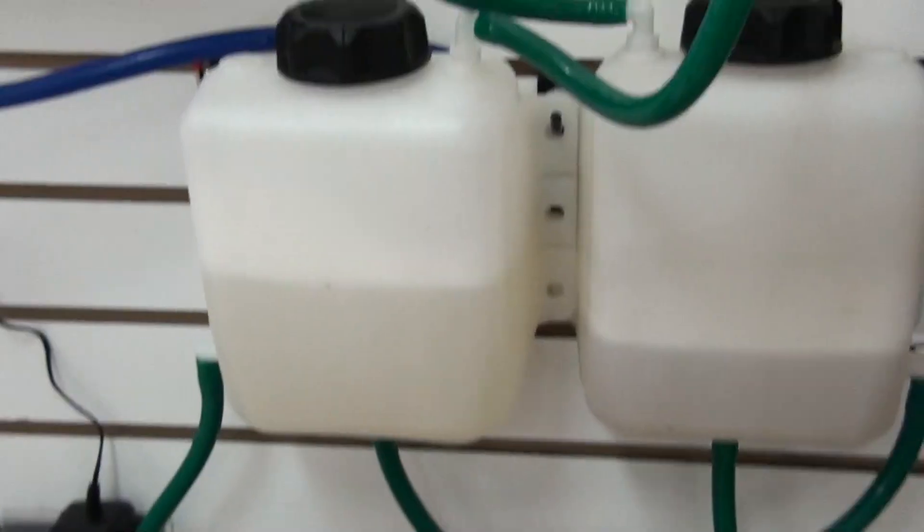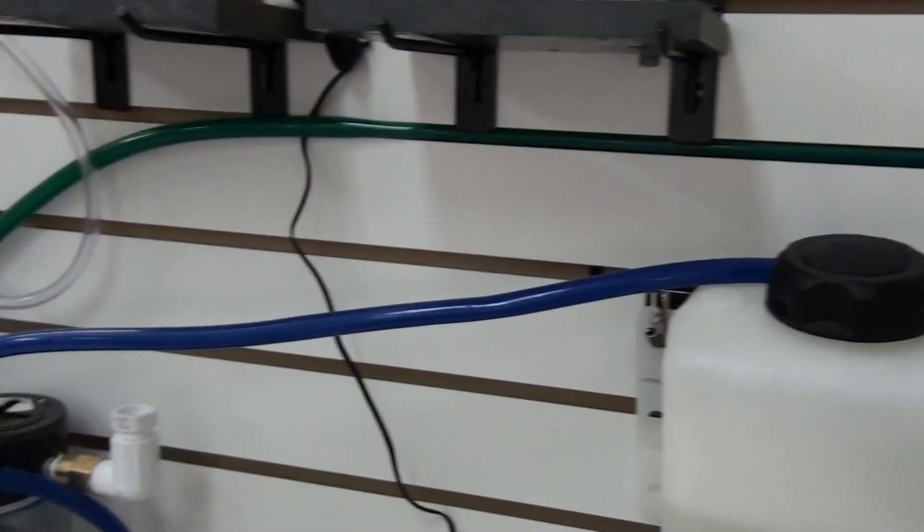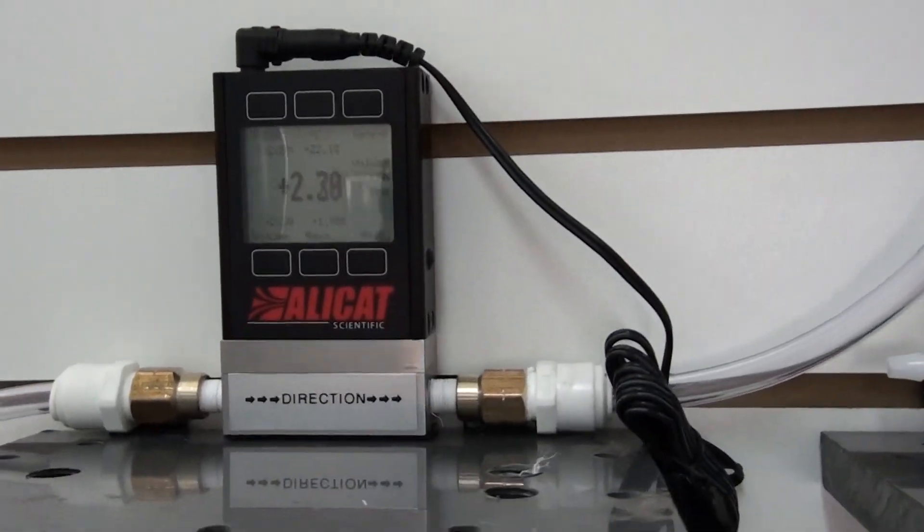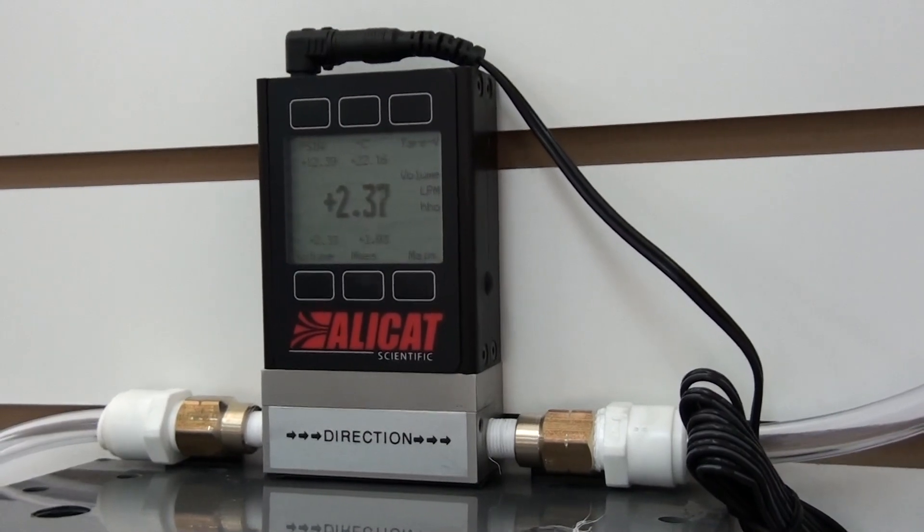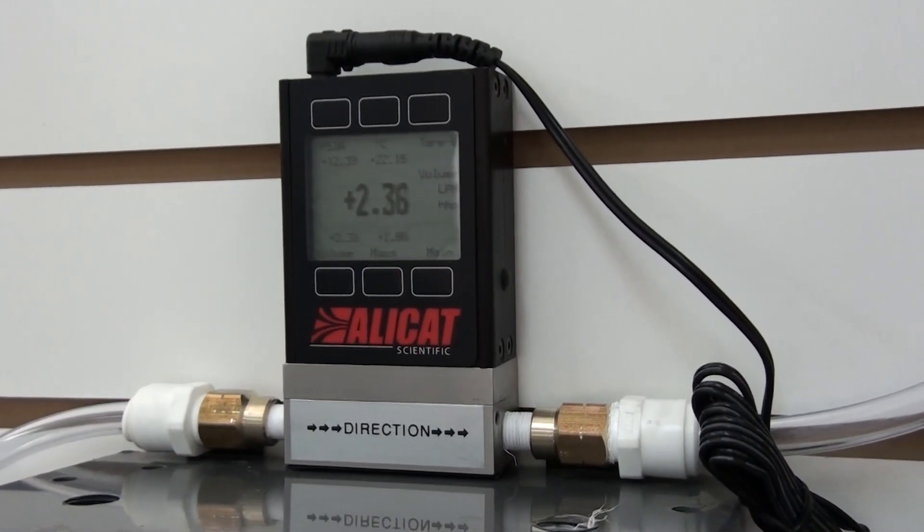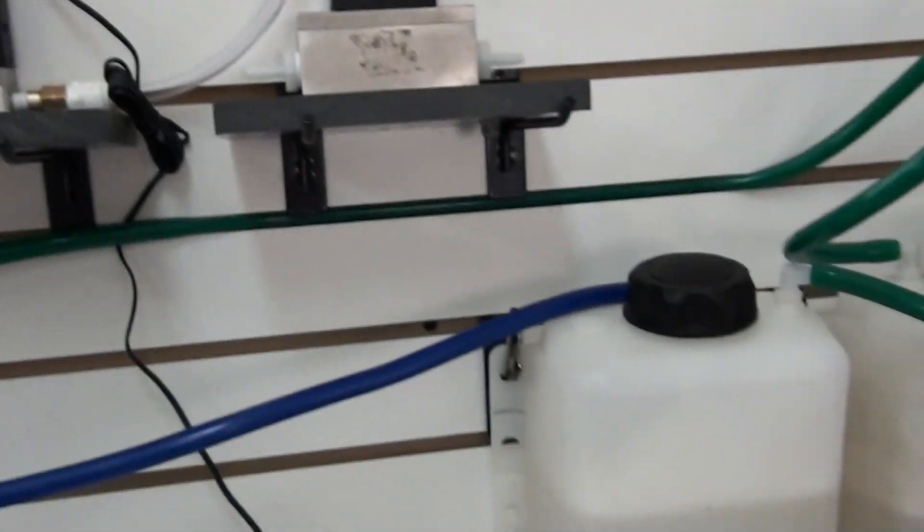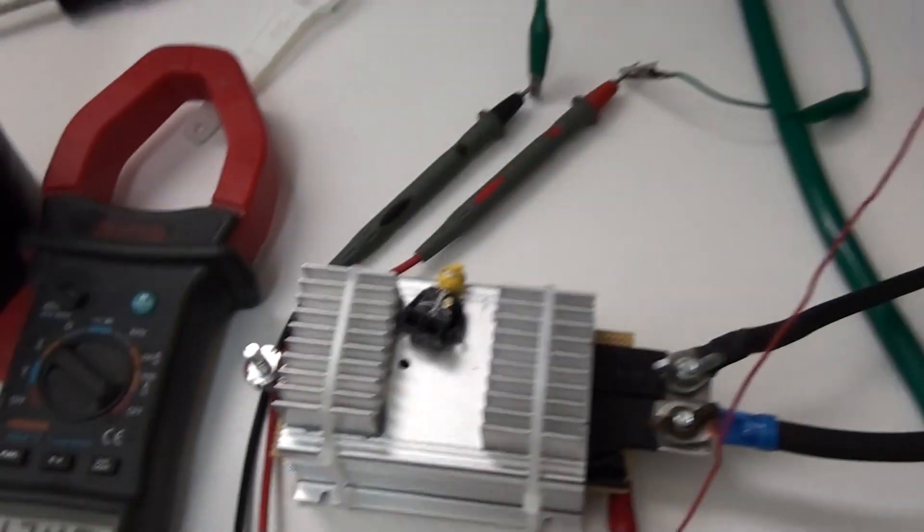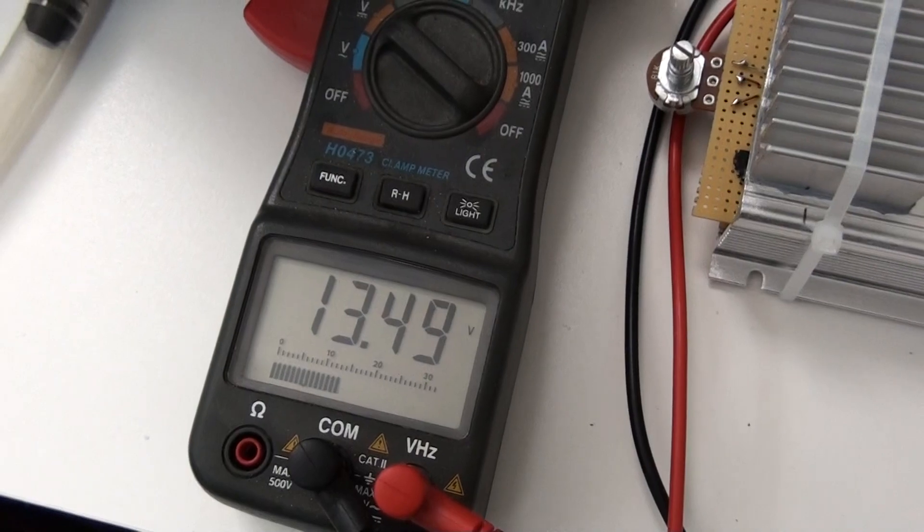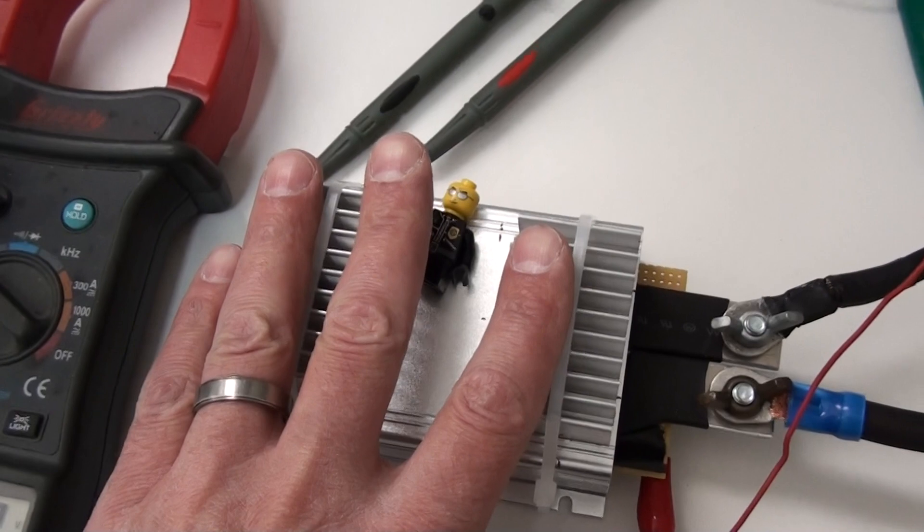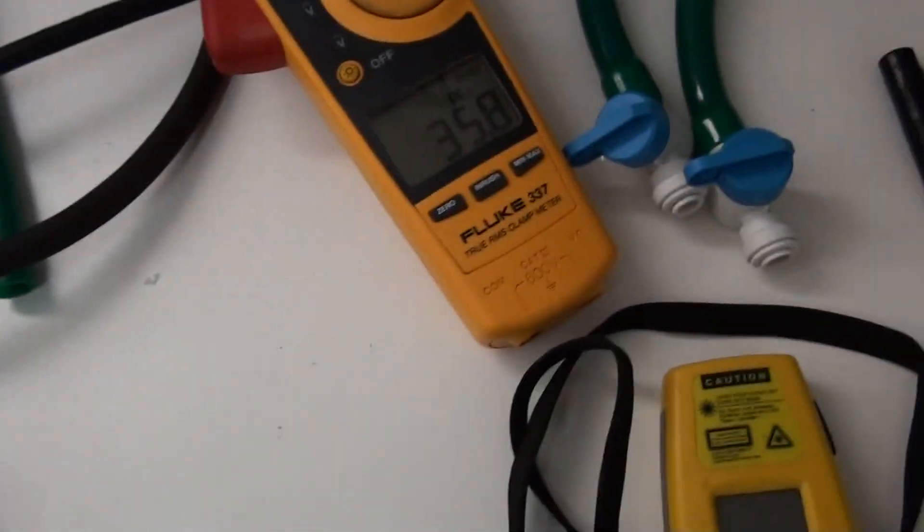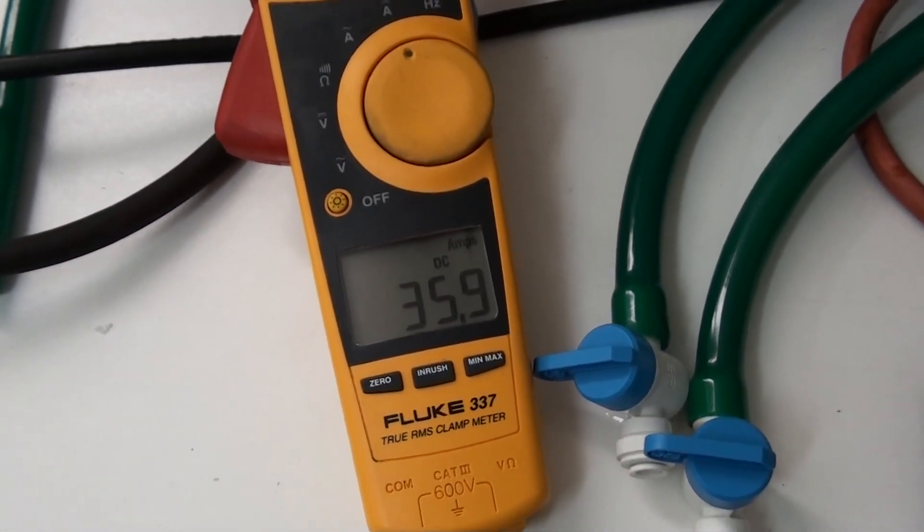Right now I've got it hooked up, both combined for HHO so I can do the efficiency test. The meter set on HHO with 2.3 liters per minute, 13.5 volts, this thing's running good by the way, 35.9 amps.